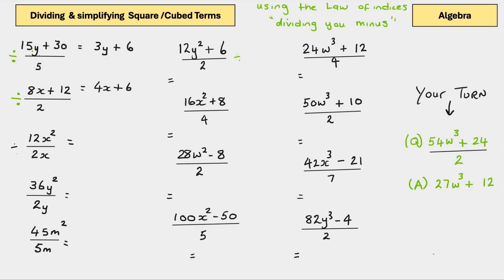15y divided by 5 equals 3y plus 6. There's a y attached. 15 divided by 5 equals 3, so 3y plus 6. Remember, it's not an equation, because an equation would have an equal sign at the end.